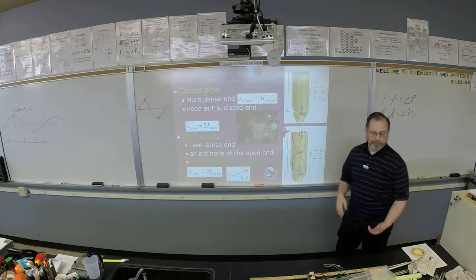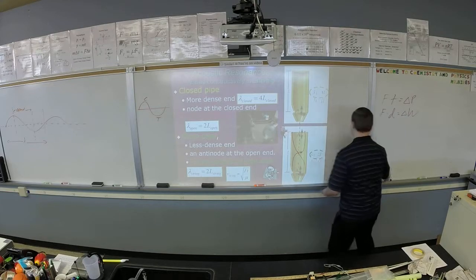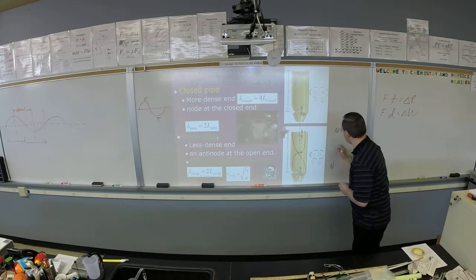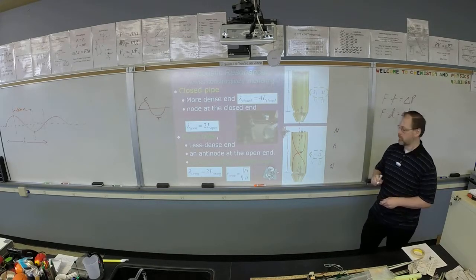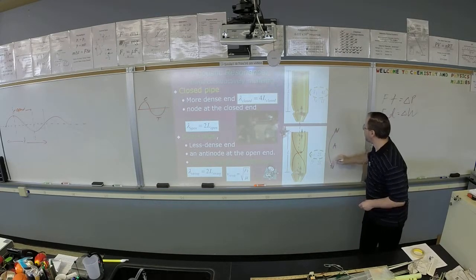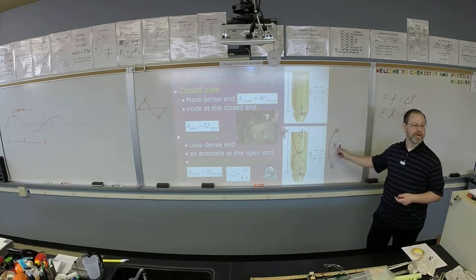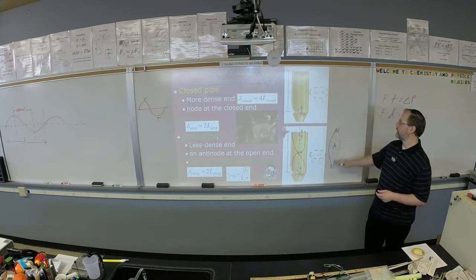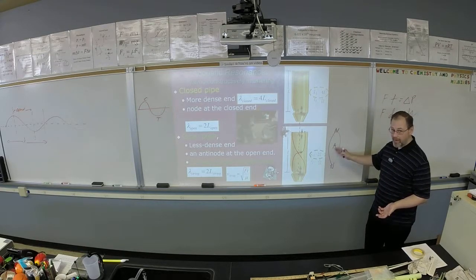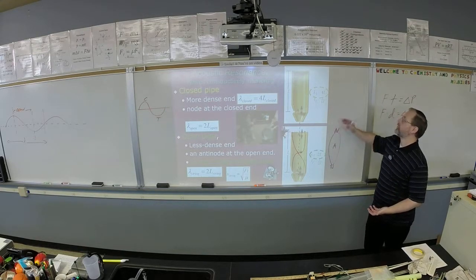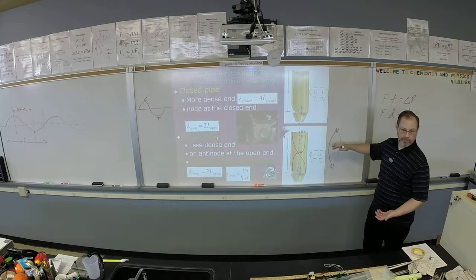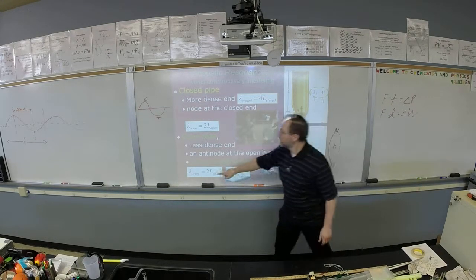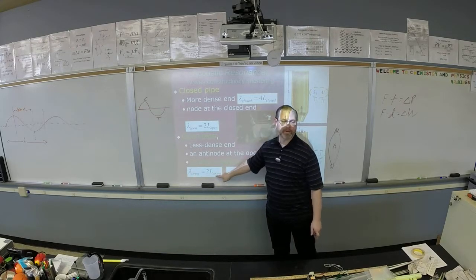In a string, you get the exact opposite situation. In a string, you have a node and a node with an anti-node in the middle. With a string, the fundamental wave looks like that. This is what we're going to be investigating on Friday. We're looking at the string waves. Can you see the difference? But you still get the replication of the half wave. A string and an open pipe both produce a wave that's twice the size of the instrument.